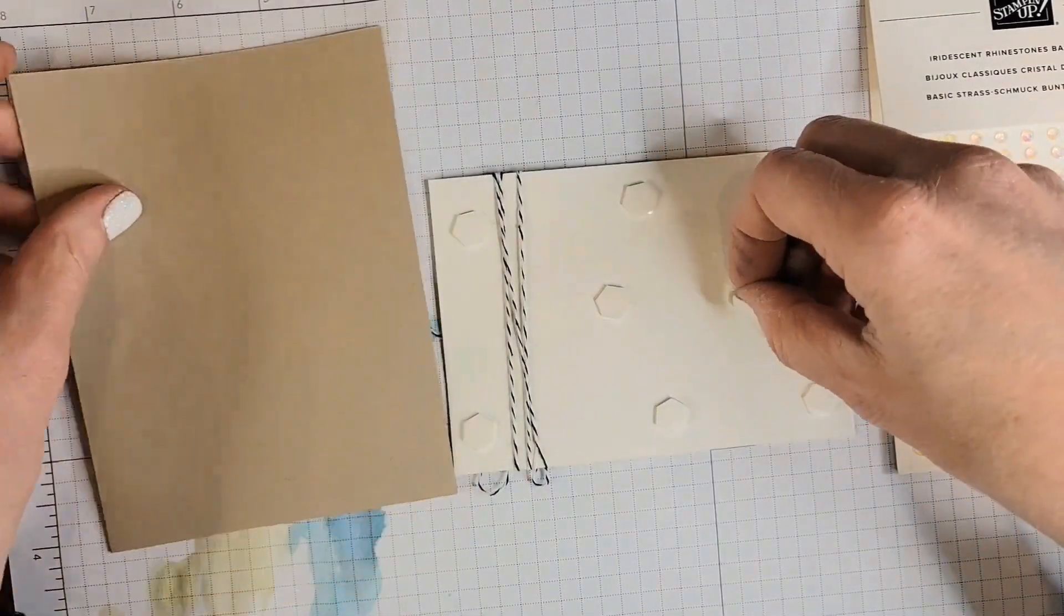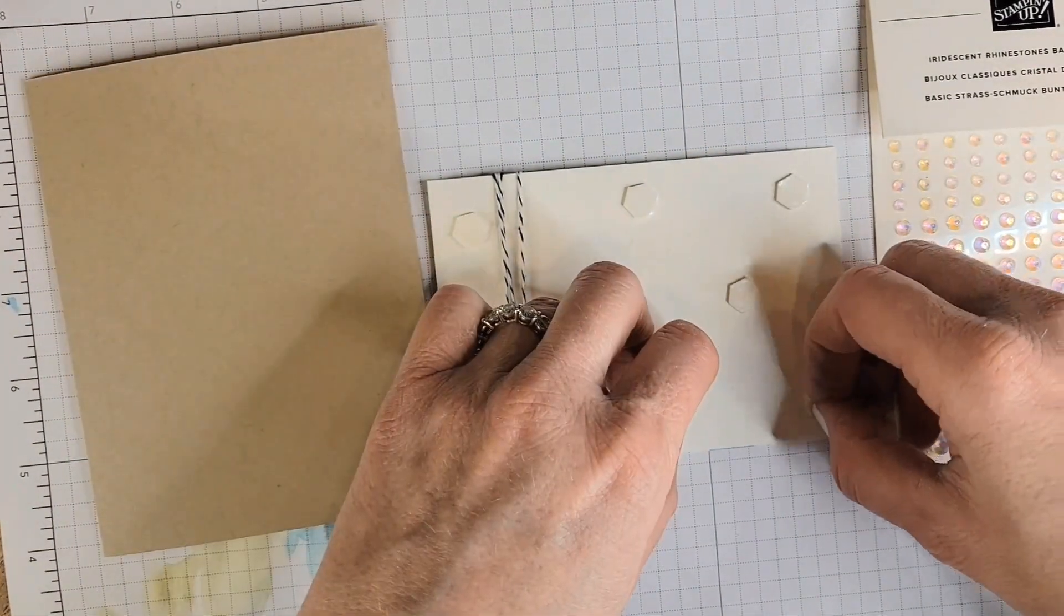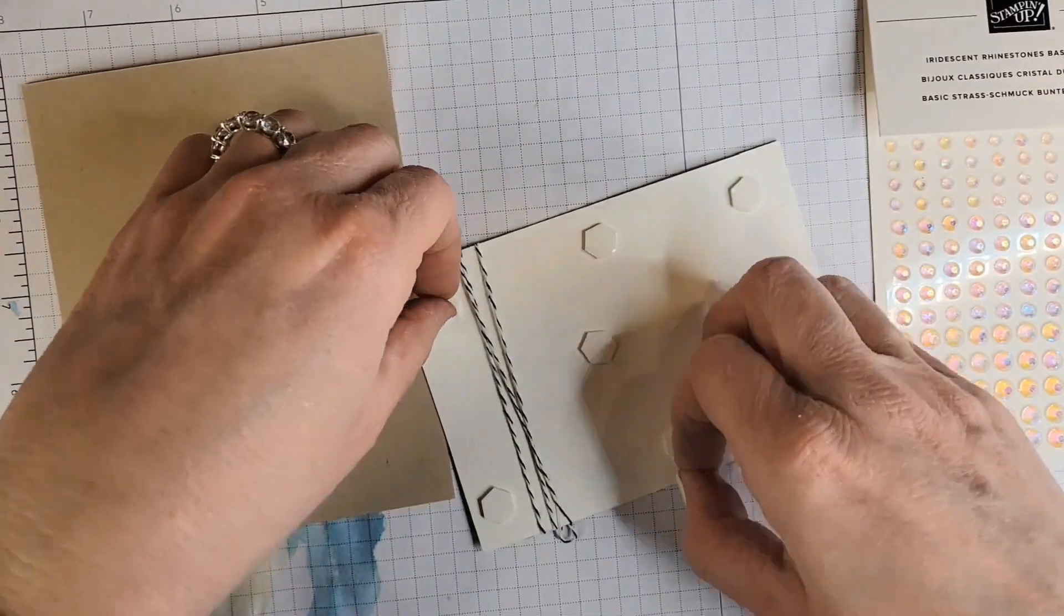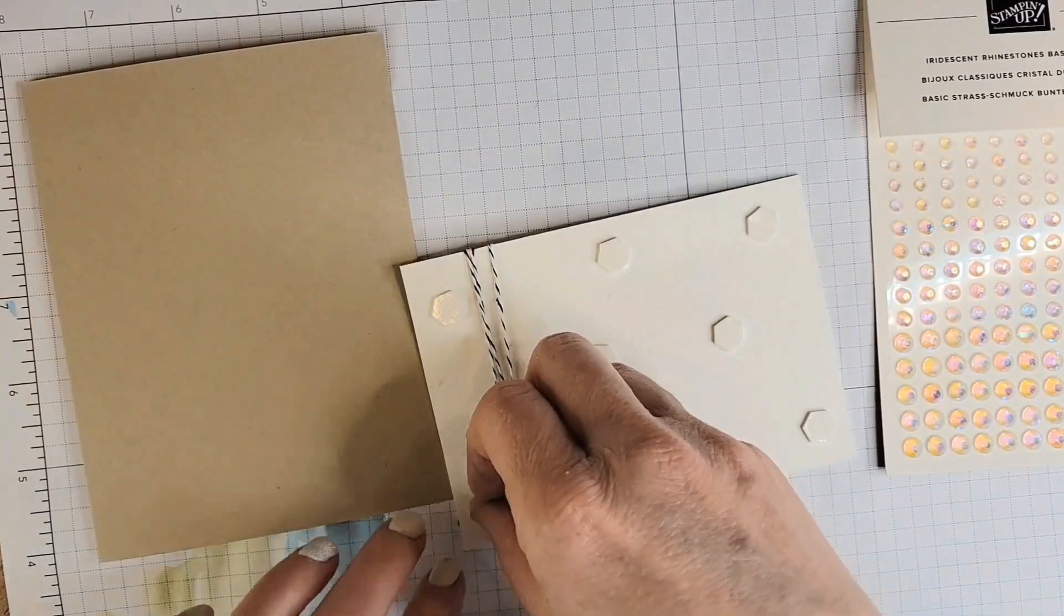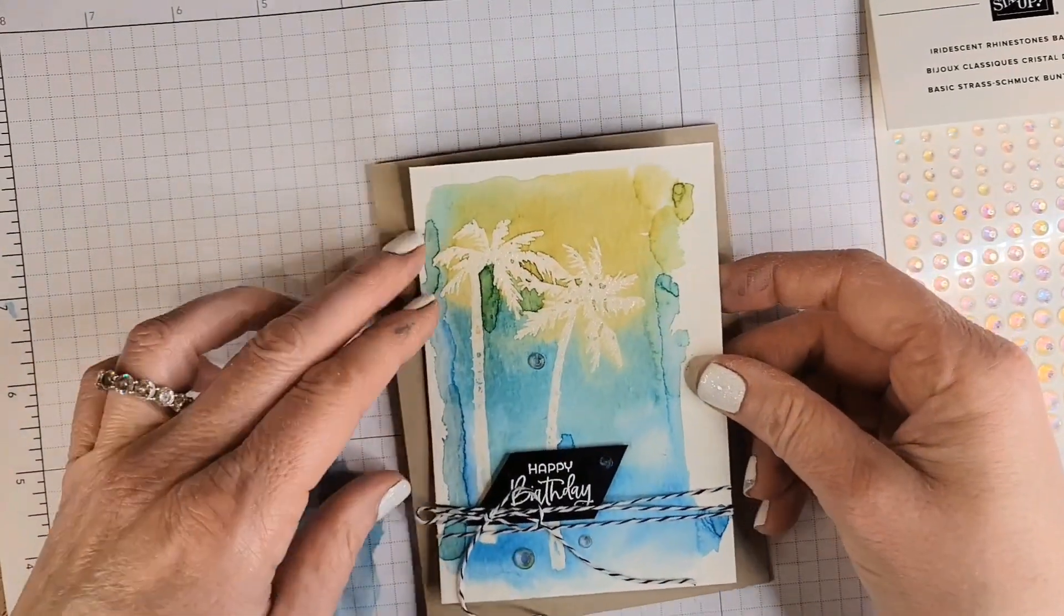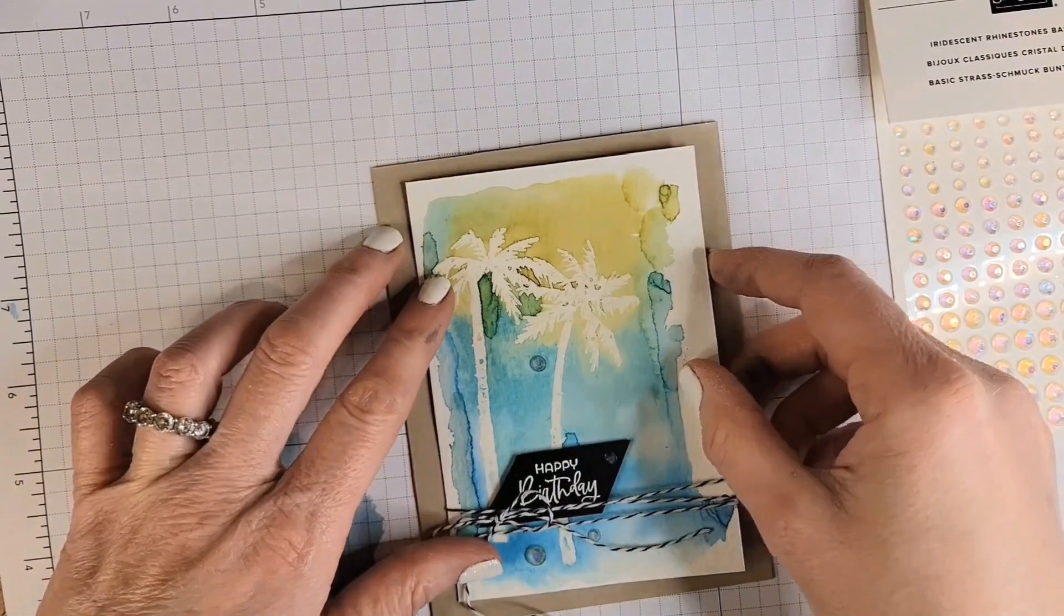Now I selected crumb cake because it reminded me of sand. So that's it. That mixed in nicely with our amazing little escape card, escape to the beach card. Get that right in there in the middle. And all finished.